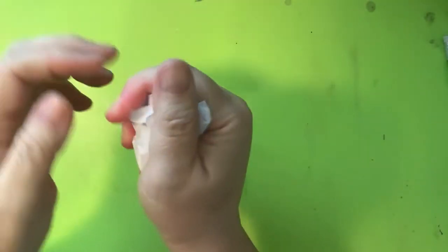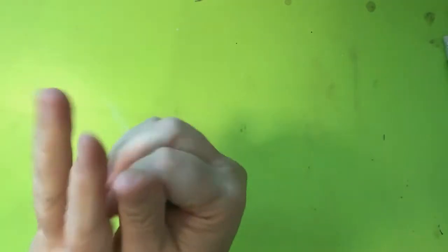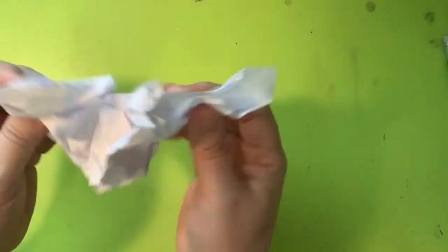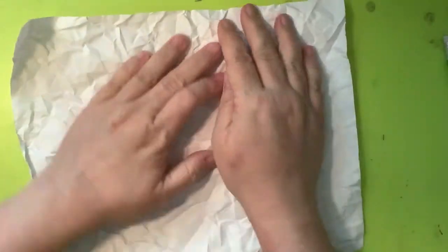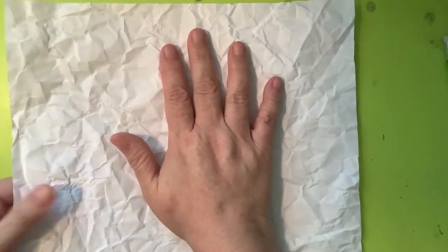So first thing I'm just going to crunchle, crunchle the paper up as tight as you can and that helps to get out your frustrations as well. I find, you know, as opposed to hitting something, crumpling things up is really great. And then we're going to uncrunchle it.